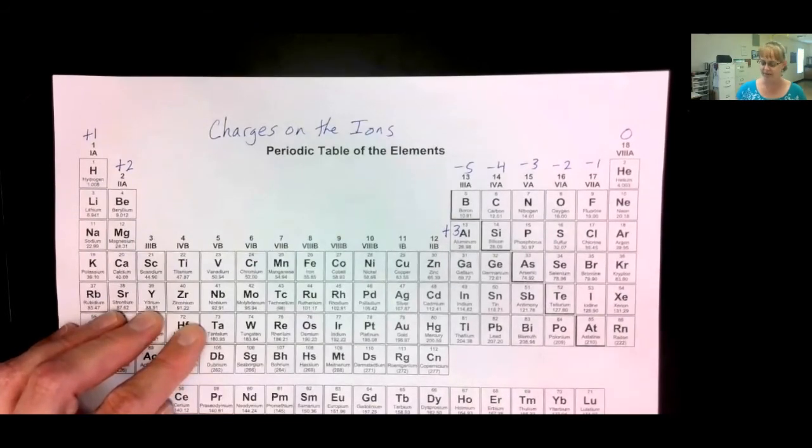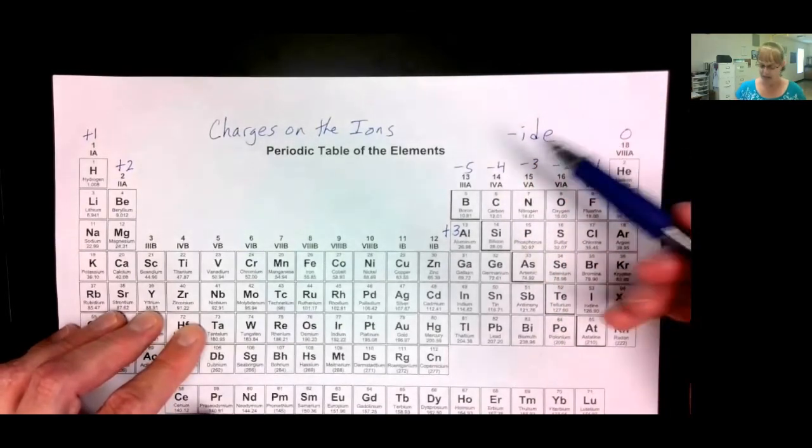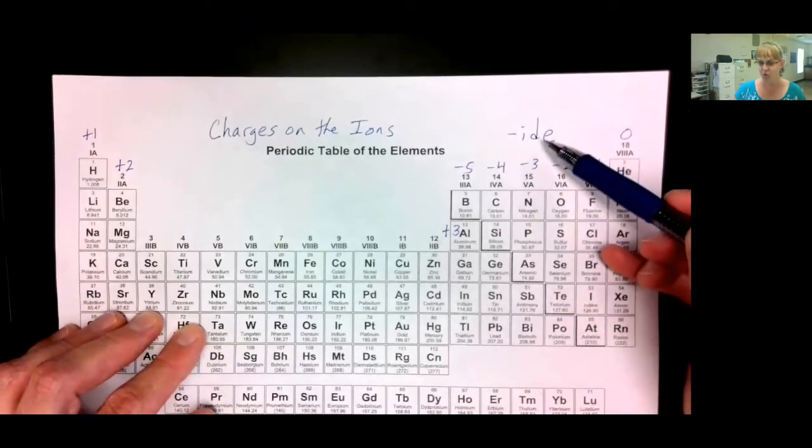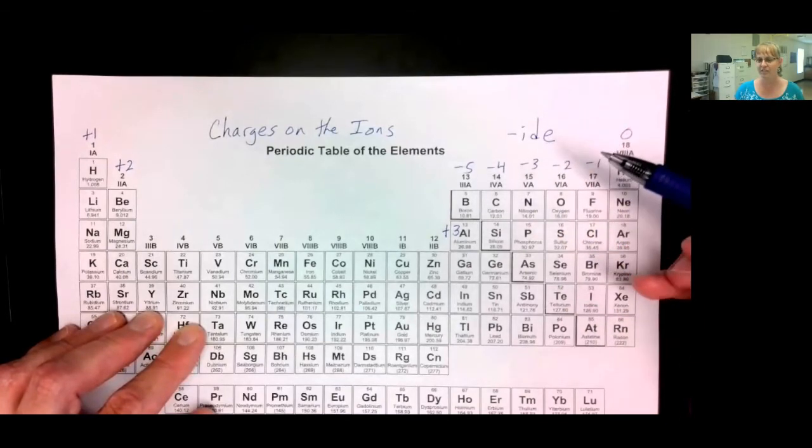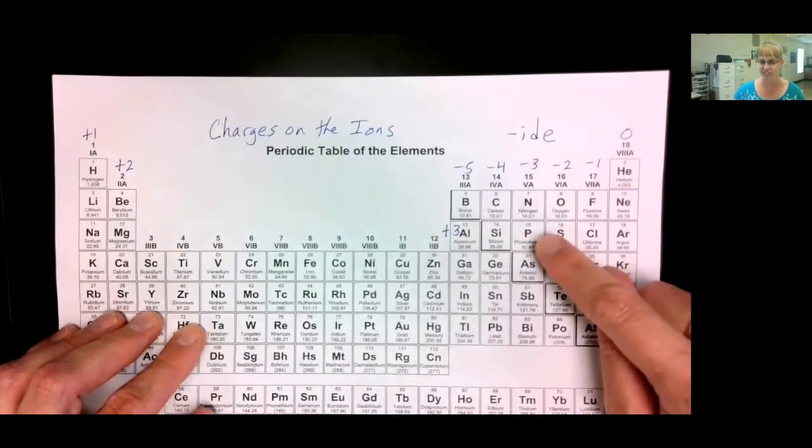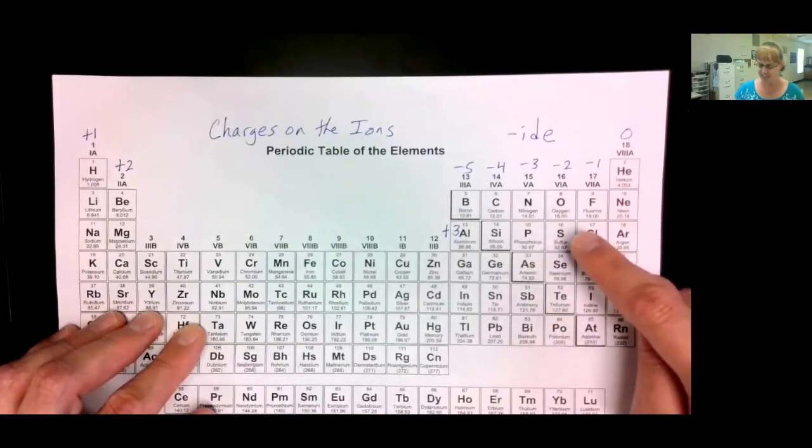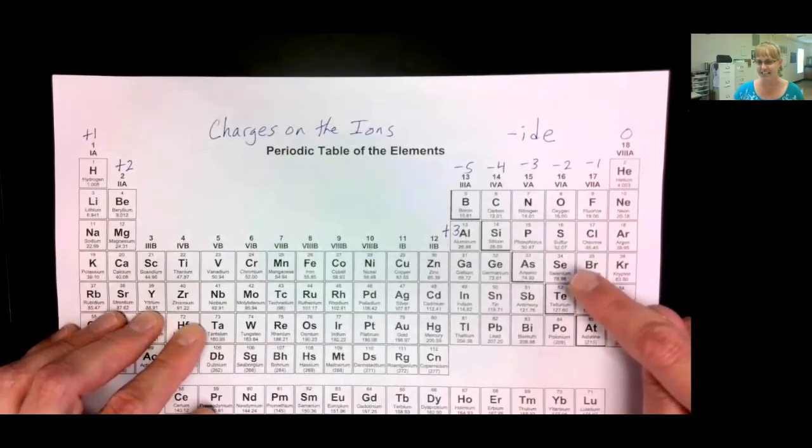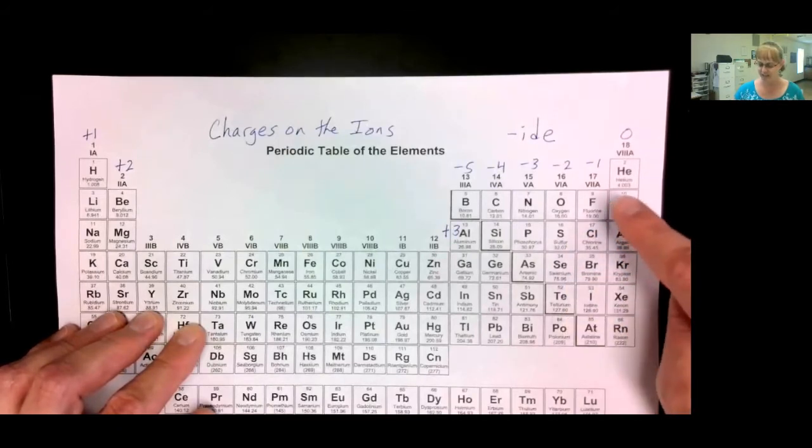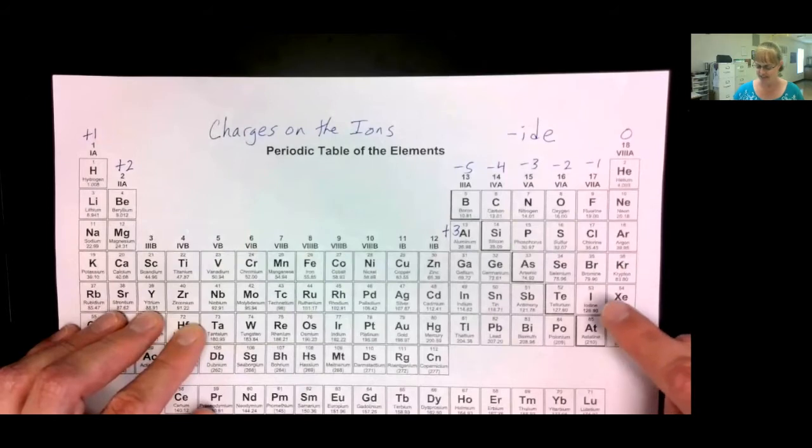The negative ions, however, get a different name. Their name changes to end with ide. So, a boron atom becomes a boride ion. Let me give you all the names. Carbon becomes carbide. Silicon, silicide. Nitrogen becomes nitride. Phosphorus becomes phosphide. Arsenic, arsenide. Oxygen becomes oxide. Sulfur, sulfide. Selenium, selenide. Tellurium, telluride. Fluorine, fluoride. Chlorine, chloride. Bromine, bromide. Iodine, iodide. And astatine becomes astatide.